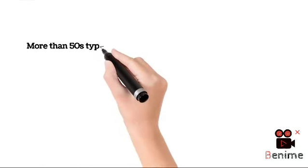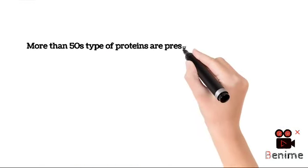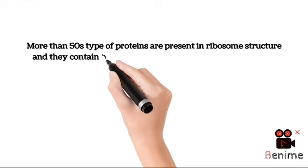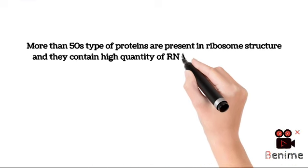More than 50 types of proteins are present in ribosome structure and they contain high quantities of RNA. Under the direction of the nucleus, ribosomes produce the proteins needed by the cell.